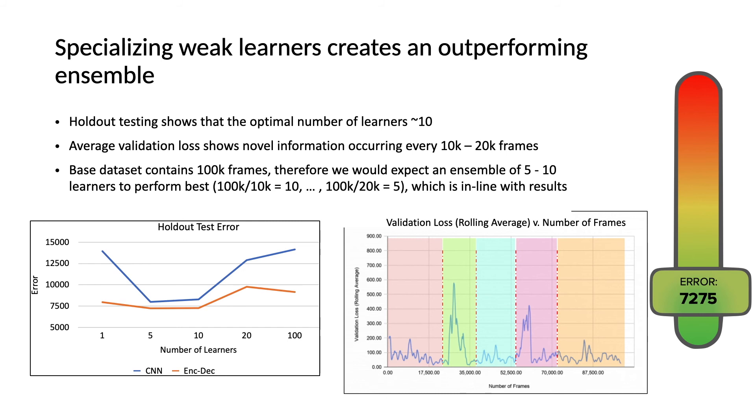When we started testing our sampling and ensembling methodology, we saw that consistently across different types of deep learning architectures, many weak learners were outperforming one larger learner, with an optimal number of around 10 parameters, as you can see in the bottom left graph. We started digging and trying to understand why this was happening. And on the bottom right graph, you can see the validation loss over the number of frames, over time.